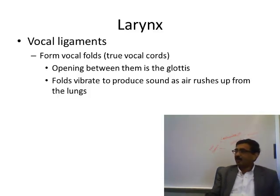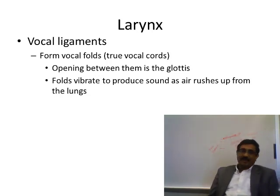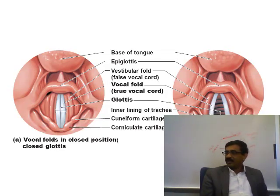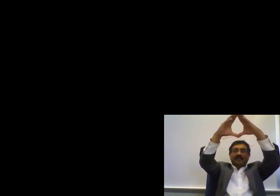Inside the larynx there are two pairs of vocal folds. The upper pair are called the false vocal folds and the lower ones are the true vocal folds. The true vocal folds are responsible for the production of sound. The opening between the two vocal folds is called the glottis, which opens and closes very fast during speech.